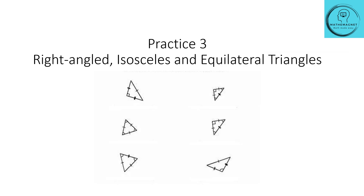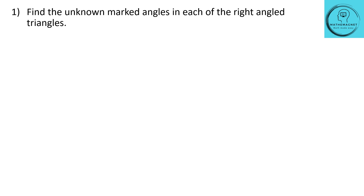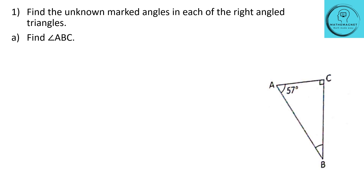Let's start solving Practice 3: Right angle, isosceles, and equilateral triangles. Let's start with the first question: find the unknown marked angles in each of the right angle triangles. Question A: find angle ABC. They have asked us to find the unknown angle ABC in this triangle.